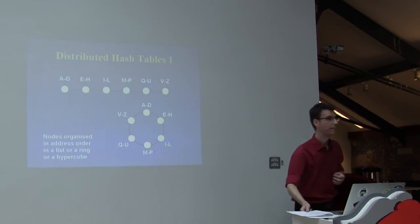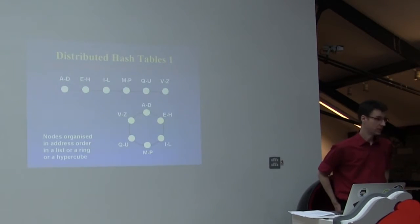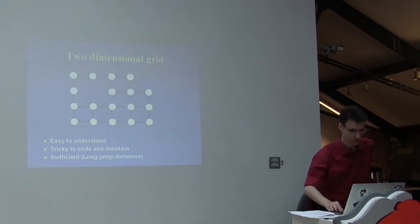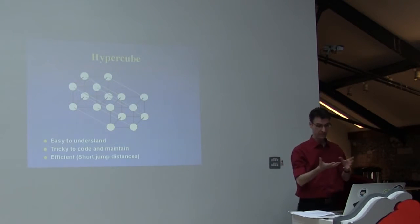One question: this sort of ring has a natural order. Does a hypercube have a natural order? Yes, because a hypercube has an address space. If you look at the one-dimensional hypercube, it's two nodes—nodes 0 and 1. If you extend it to two-dimensional, then you have nodes 0,0 and 0,1, and that's 1,0 and 1,1.